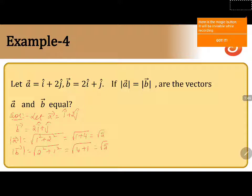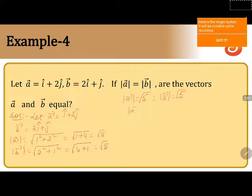If we observe, magnitude of A equals root 5 and magnitude of B also equals root 5. So, magnitude of A is equal to magnitude of B.